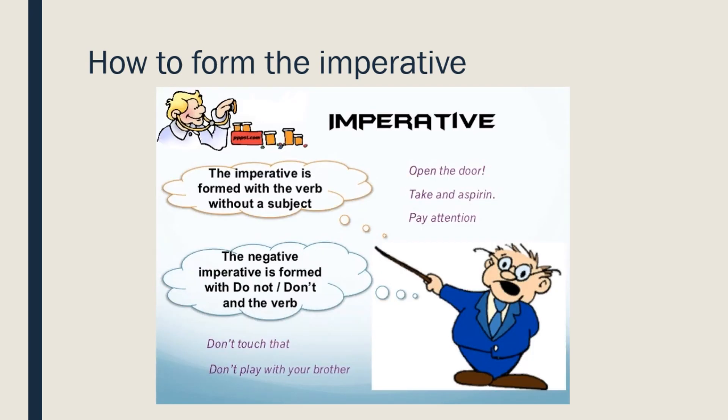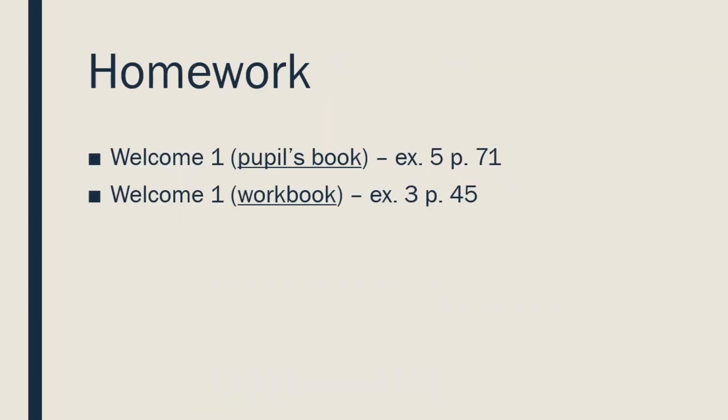So, how do we form the imperative? We need just the verb without any subject. For example, open the door. Just a verb here. Negative sentences are made with the help of do not or short form don't. Don't touch that. Дома вам нужно будет выполнить два упражнения. Одно упражнение из учебника и одно из рабочей тетради. До свидания!